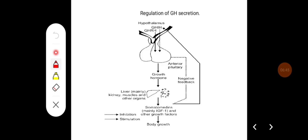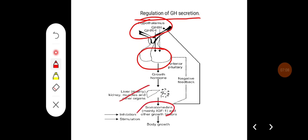Growth hormone secretion is regulated mainly by the hypothalamus via growth hormone inhibiting hormone (somatostatin) and growth hormone releasing hormone, which inhibit and stimulate GH secretion from the anterior pituitary respectively. Growth hormone stimulates the liver to produce somatomedins, which by negative feedback decrease the release of growth hormone and can also stimulate growth hormone inhibiting hormone from the hypothalamus.